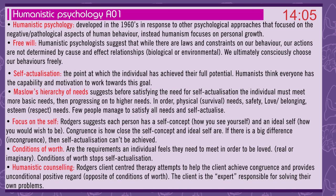Rogers suggests each person has a self-concept — how you see yourself — and an ideal self — how you wish to be. Congruence is how close these are; if there's a big difference — incongruence — then self-actualisation can't be achieved. Conditions of worth are the requirements an individual feels they need to meet to be loved; they can be real or imaginary and can stop self-actualisation. Rogers' client-centred therapy attempts to help the client achieve congruence and provides unconditional positive regard — the opposite of conditions of worth — with the client as the expert responsible for solving their own problems.